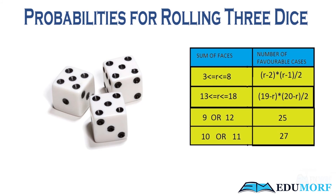If the sum of the faces is either 9 or 12, the number of favorable cases is 25. If the sum of faces is either 10 or 11, the number of favorable cases is 27.